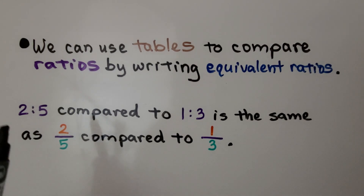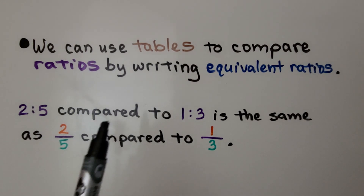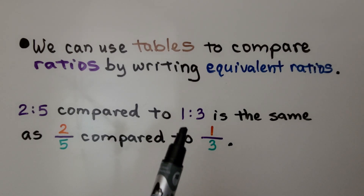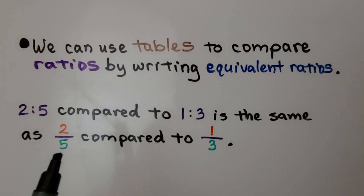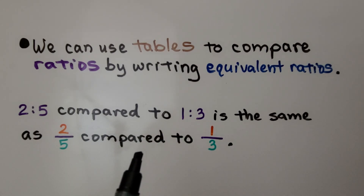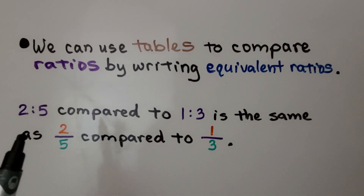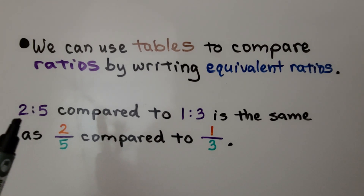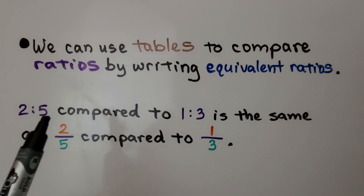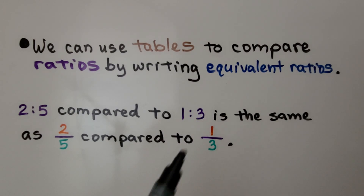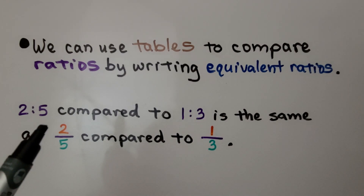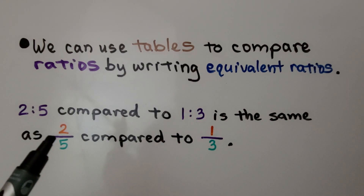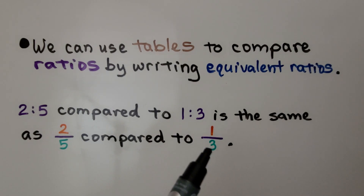The ratio 2 to 5 compared to the ratio 1 to 3 is the same as 2 fifths compared to 1 third. Remember, we can write a ratio with a colon, and we can also write them as a fraction — 2 to 5 and 1 to 3.